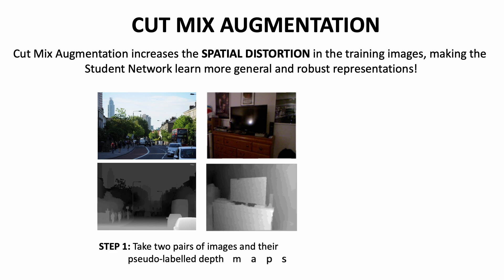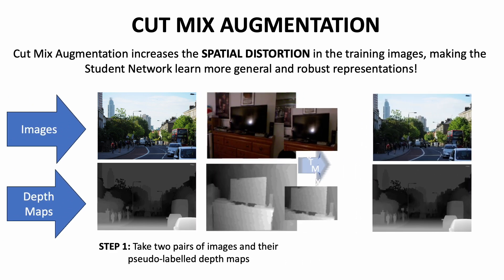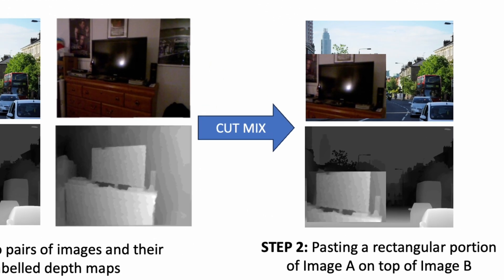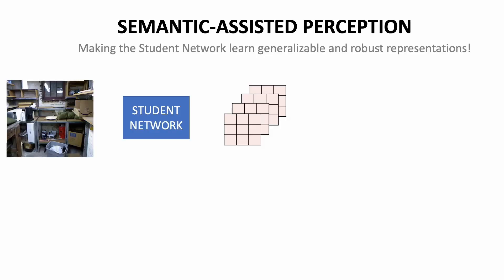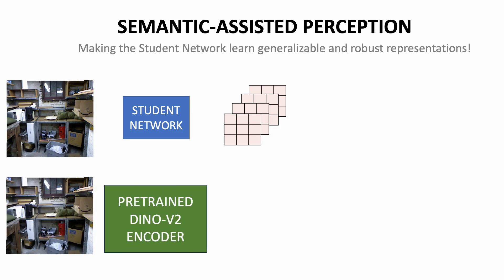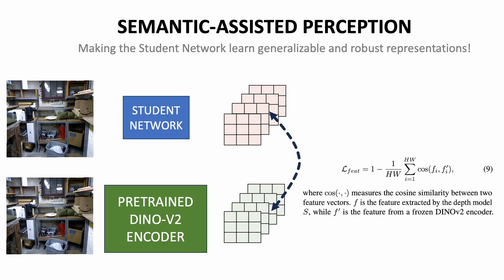Cut-mix involves combining a random pair of unlabeled images using a binary rectangular mask, replacing a rectangular portion of image A with image B. The network is also trained with an auxiliary task called semantic assisted perception. A strong pre-trained computer vision model like DINOv2, trained on millions of images in a self-supervised manner, is used. Given an image, we aim to reduce the cosine distance between the embeddings produced by our student model and the pre-trained DINOv2 encoder. This enables the student model to capture semantic perception capabilities of the larger DINOv2 encoder, which it then uses to predict the depth map. By combining spatial distortions and semantic assisted perception, the student network generalizes better and begins to outperform the original teacher network.